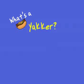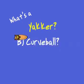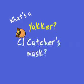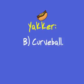In the book Rocky the Mud Hen, what's a yakker? Is it A, the radio announcer, B, a curve ball, or C, the catcher's mask? The answer is B — a yakker is a curve ball.